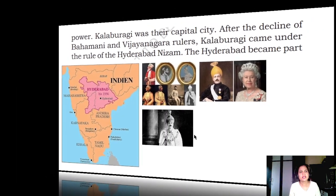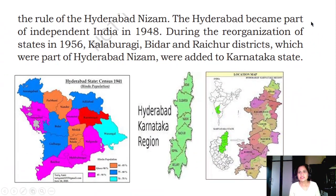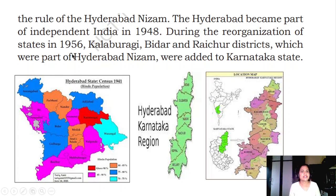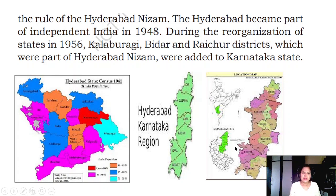The rule of the Hyderabad Nizams became part of independent India in 1948. India got independence in 1947, but it took one year because the Hyderabad Nizam kings opposed handing over and integrating their kingdom. The government took one year to take over this part of India. During the reorganization of states in 1956, Hyderabad-Karnataka was included in Karnataka.